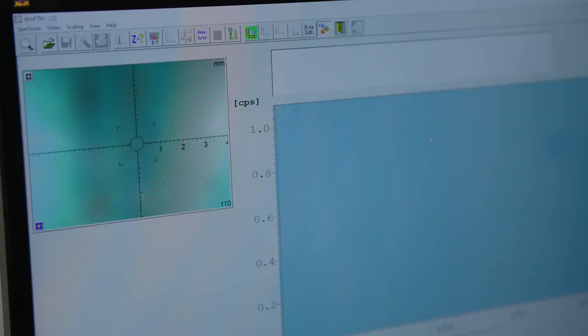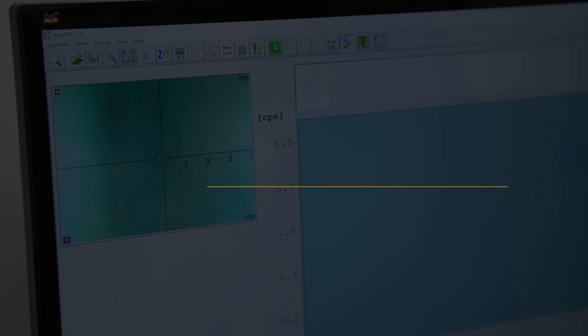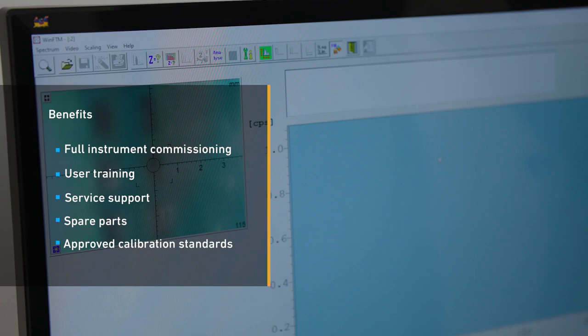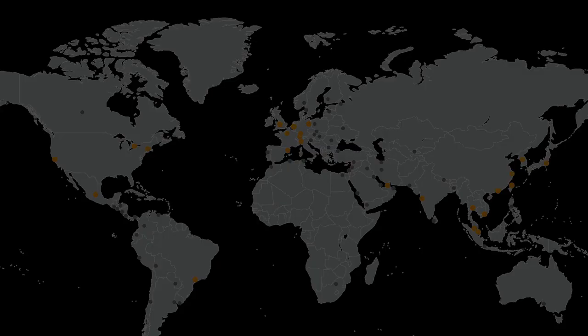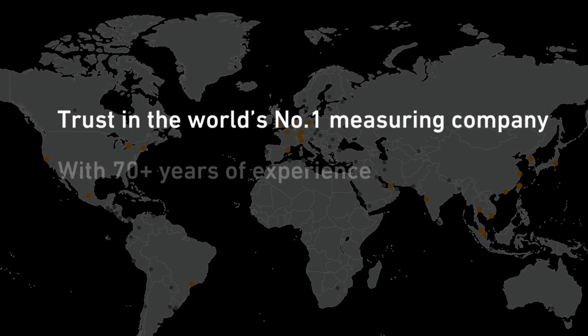Why choose Fissers? Fissers customers benefit from full instrument commissioning, user training, service support, spare parts, and approved calibration standards. Trust in the world's number one measuring company, with 70 plus years of experience and German build quality.